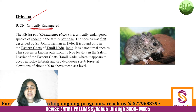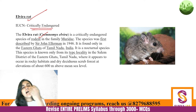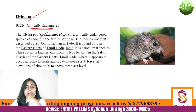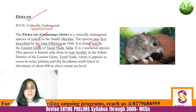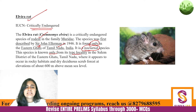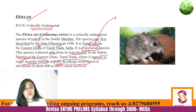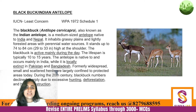Next, Elvira Rat — covered earlier as well. It is critically endangered and is found only in the Eastern Ghats, not the Western Ghats. It is found in Tamil Nadu, specifically known from its type locality in the Salem district of the Eastern Ghats. It appears to occur in rocky habitats and dry deciduous scrub forest. It is a nocturnal species, and you can say that Elvira Rat is endemic to Tamil Nadu.